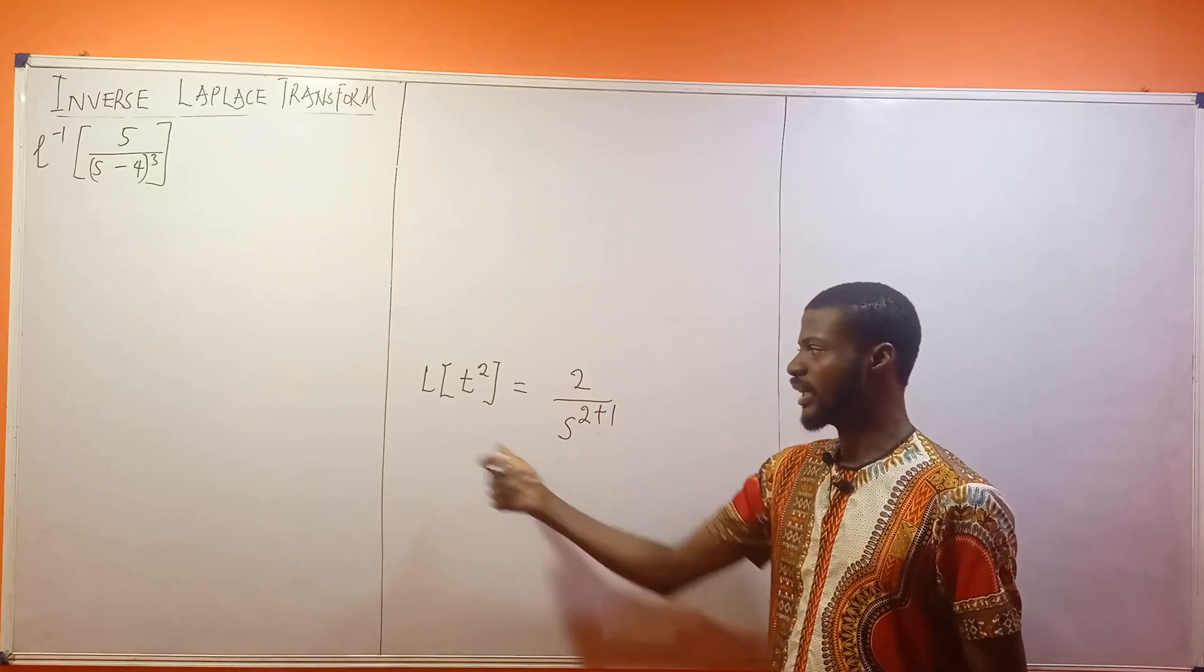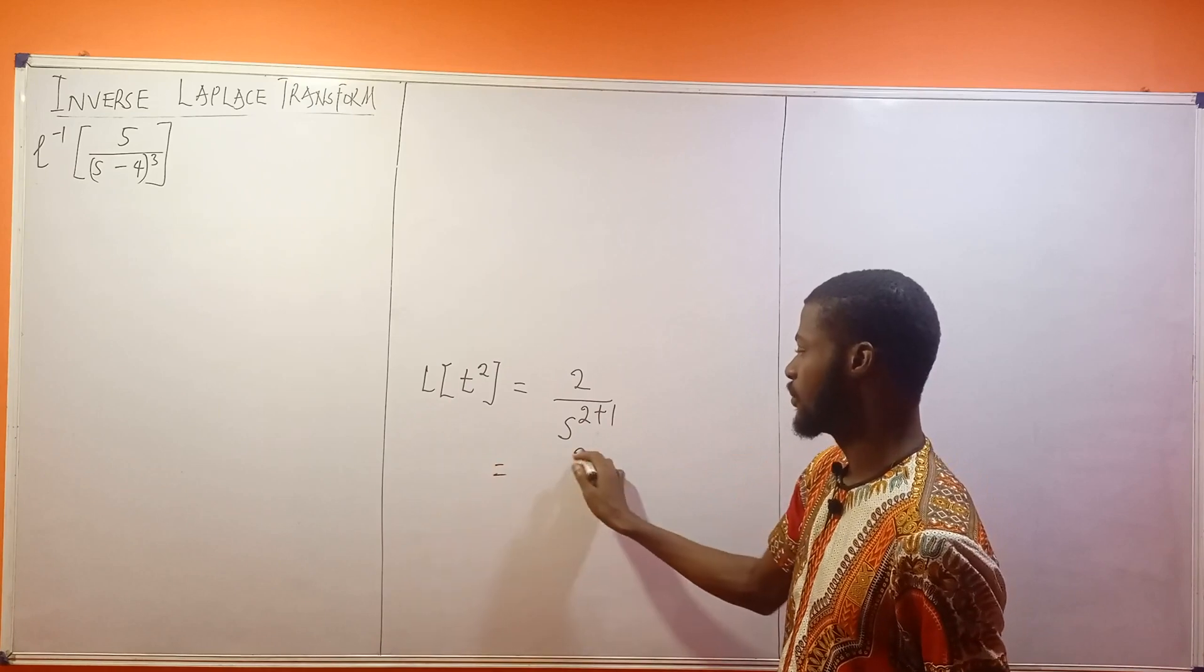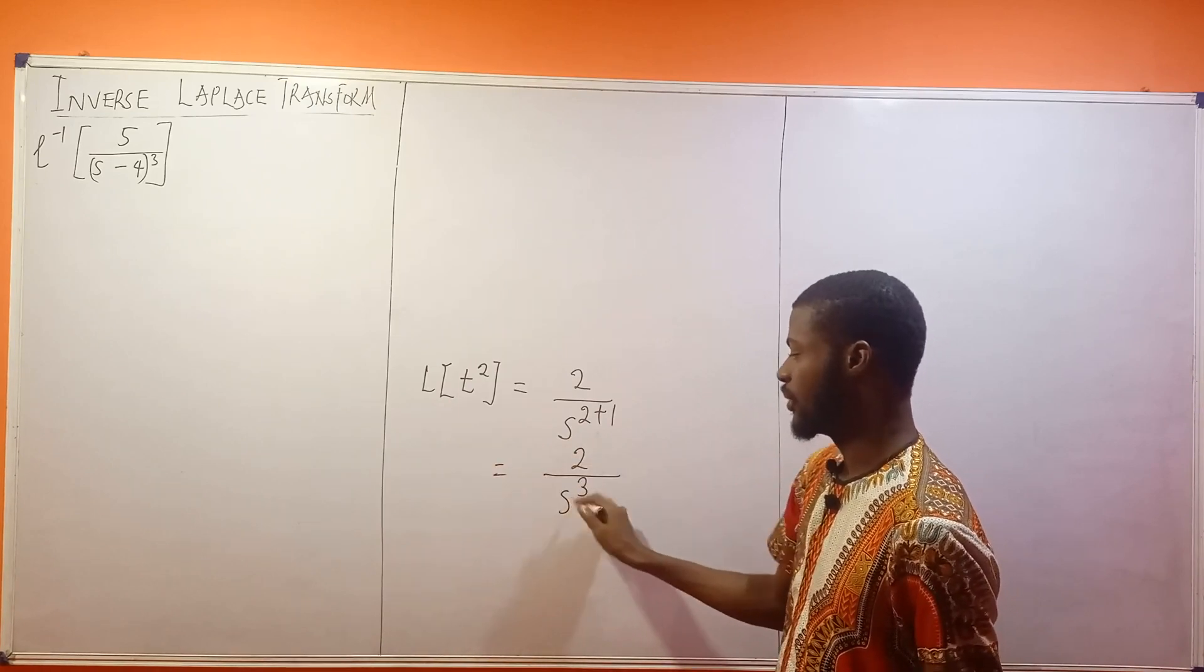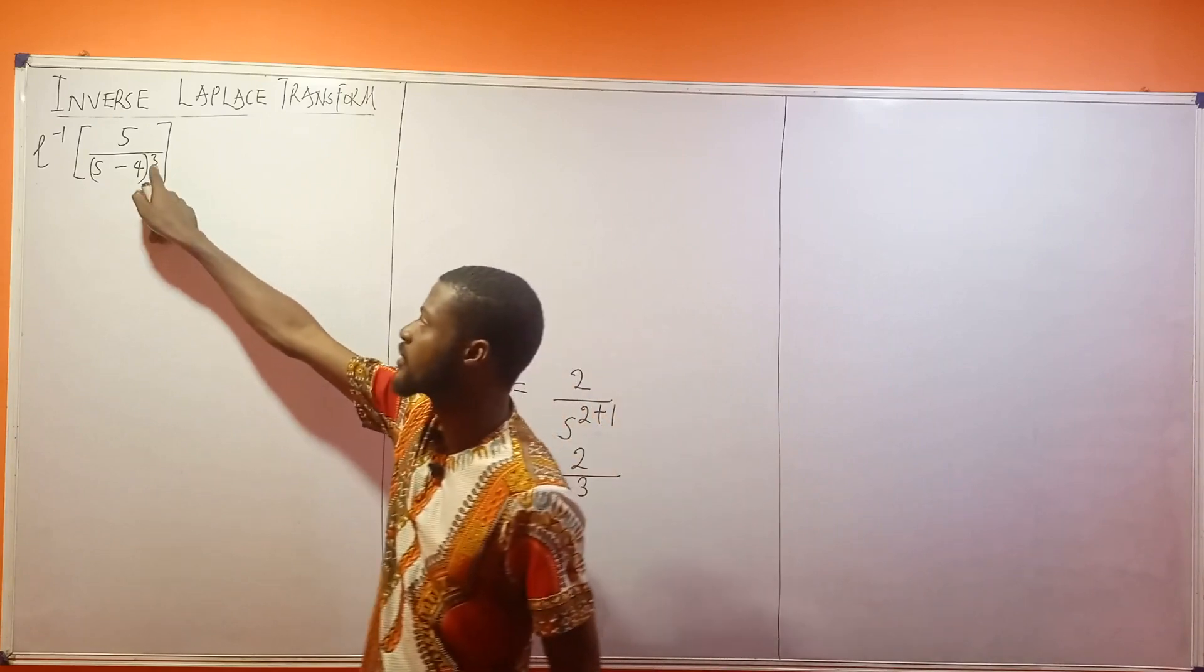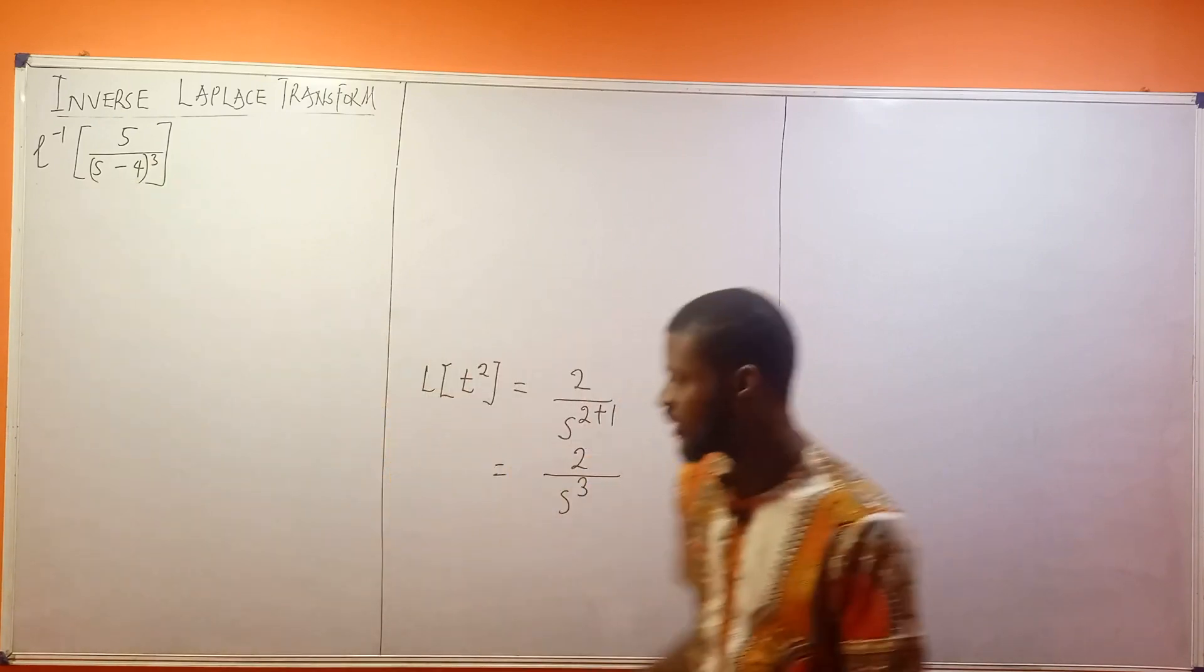Can you remember? This is what the Laplace transform of t² gives you. So it means this will then become 2 over S³. This is how this trick came about. Now, how did the S-4 come about?